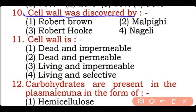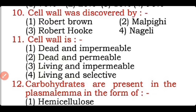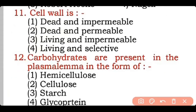Question 10: Cell wall was discovered by — Robert Brown, Malpighi, Robert Hooke, or Nageli? Correct answer is option three — cell wall was discovered by Robert Hooke in 1665. Question 11: The cell wall is — dead and impermeable, dead and permeable, living and impermeable, or living and selective? Correct answer is option two — the cell wall is dead and permeable.